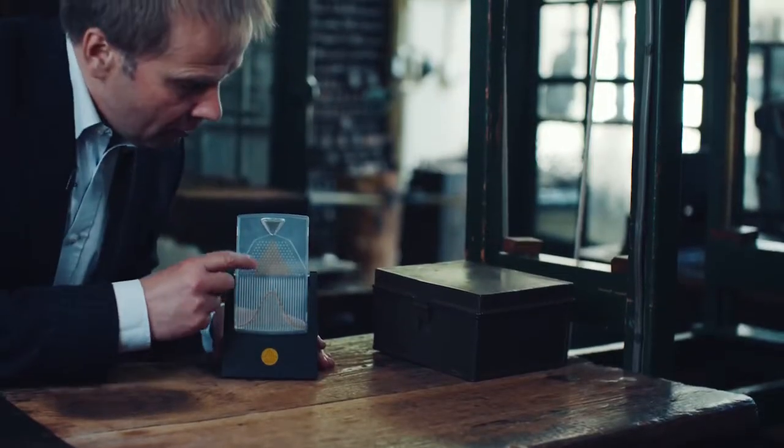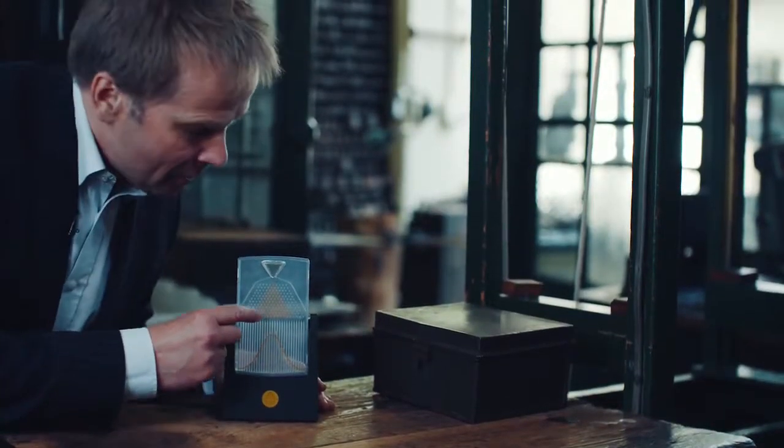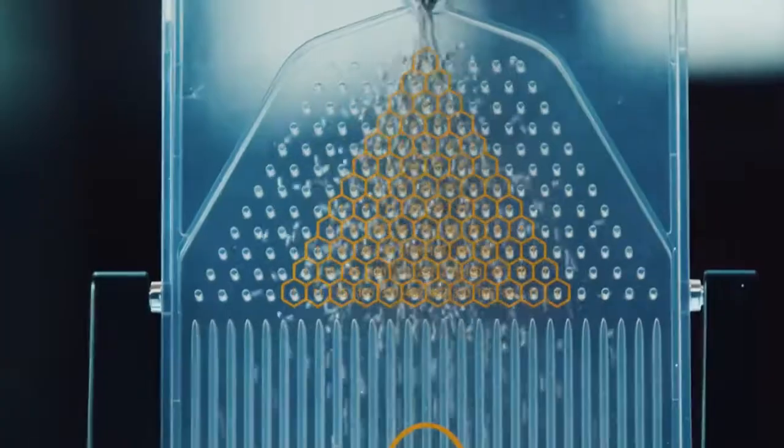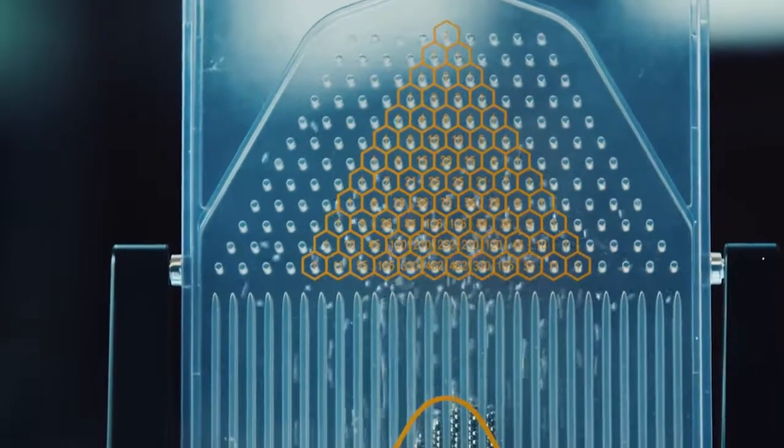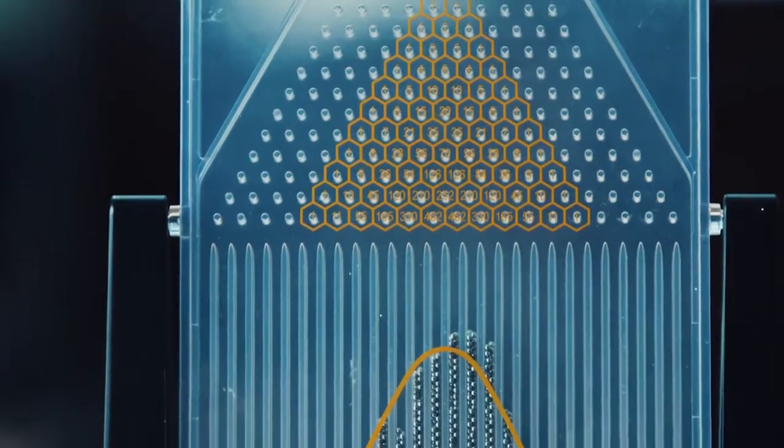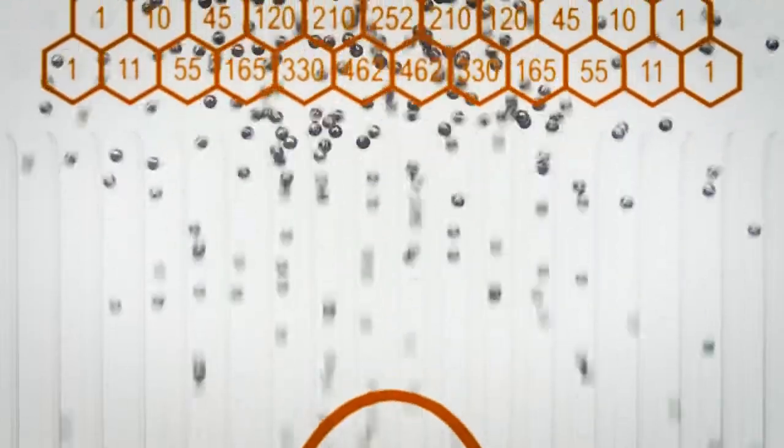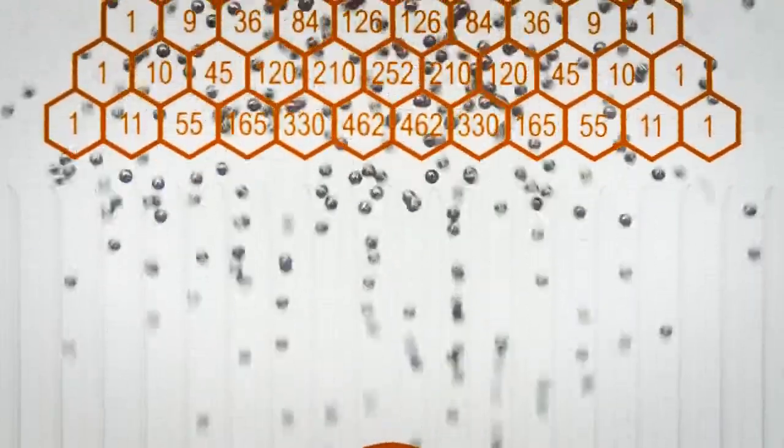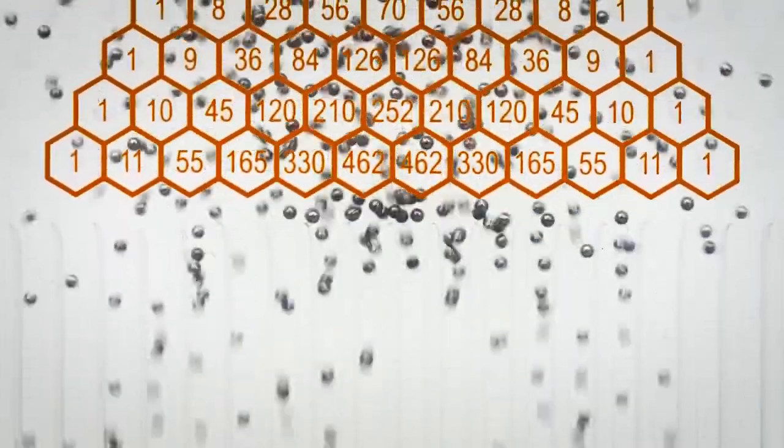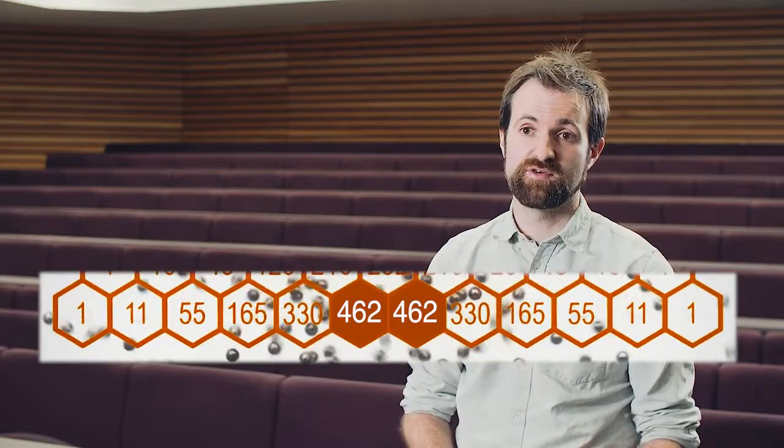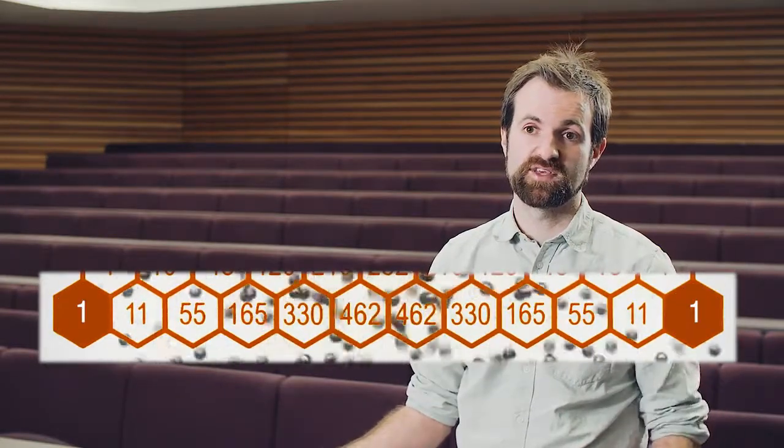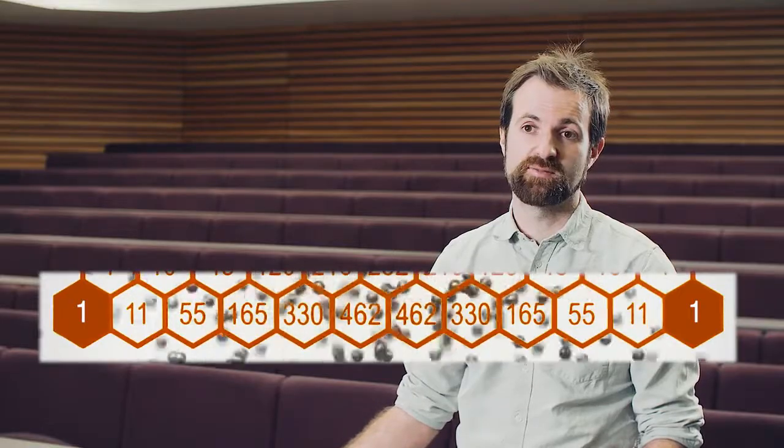If you have a look at the middle of the pattern, you'll see there are lots of different pathways that take the beads to the middle bins. The further out you go, the fewer pathways there are. When you've got 12 rows of pegs, to get to the middle two bins there's actually 462 different paths you can take compared to the single path to get to the extreme outside bins.